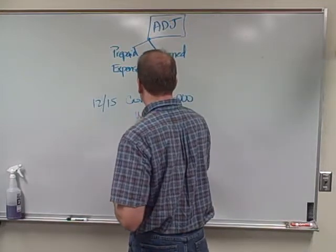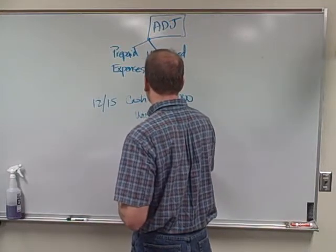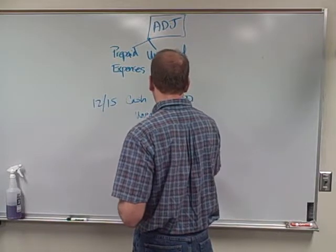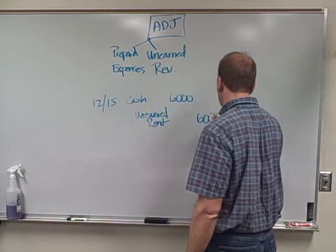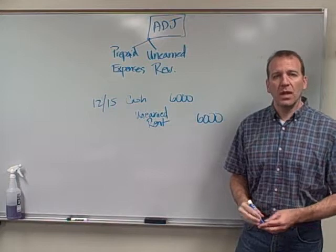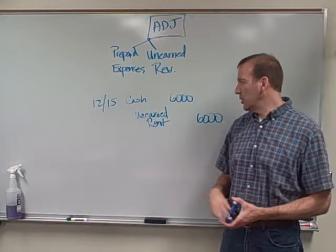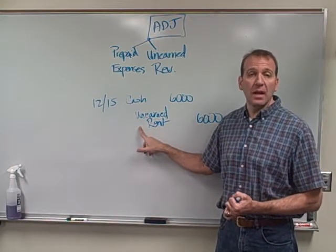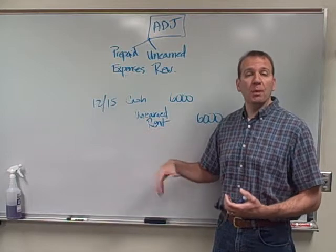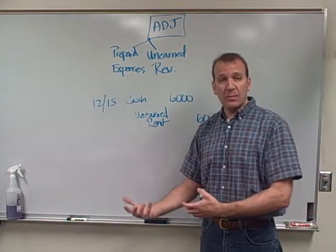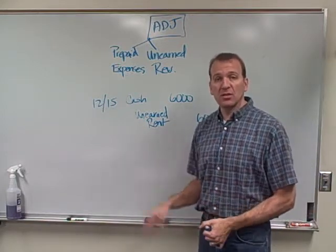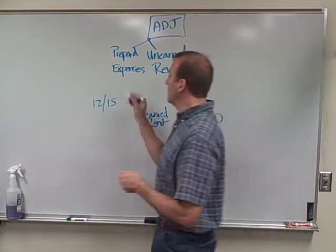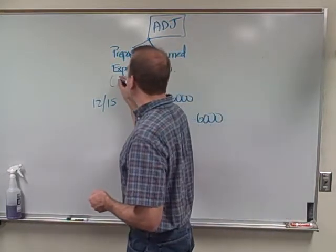We're going to receive cash of six thousand dollars, and then we're going to have unearned rent of six thousand dollars. So there's our journal entry. Unearned rent is a liability because we have to provide a service to them — we have to provide this space for them to rent. Prepaid expenses are assets; unearned revenues are liabilities.